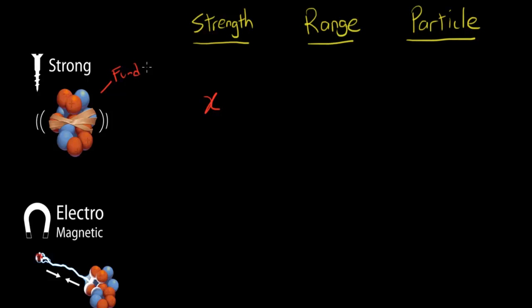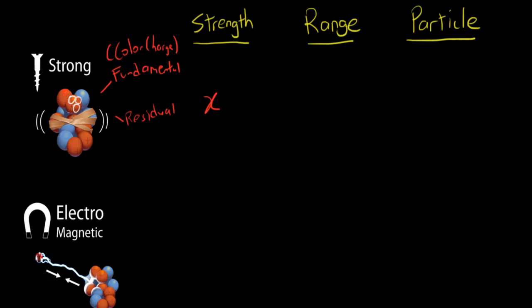There are actually two parts of the strong force. One is called the fundamental strong force, which is mediated by what's called the color charge — and the color charge is kind of weird. The other is called the residual force, which is what we see in how protons and neutrons are bound together. The fundamental force operates on the actual quarks that are inside the protons.